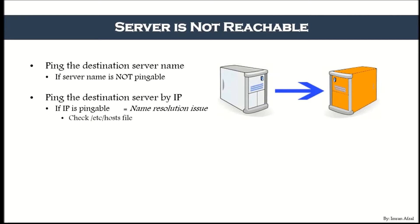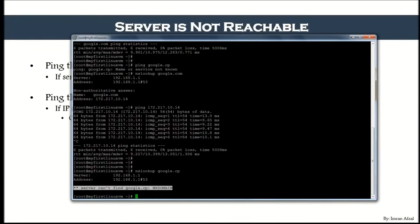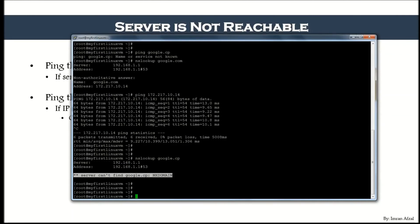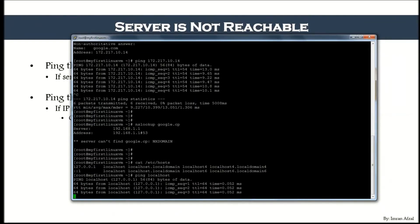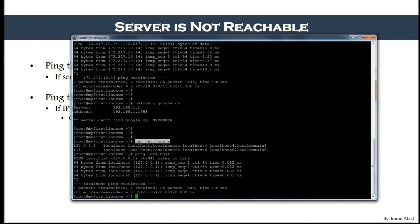If we can ping by IP but not by name, the next step is to check the /etc/hosts file. This is a local file in Linux — it also exists in Windows — that keeps local records mapping hostnames to IP addresses. Run 'cat /etc/hosts' and check if there is an entry for the server you're trying to reach.